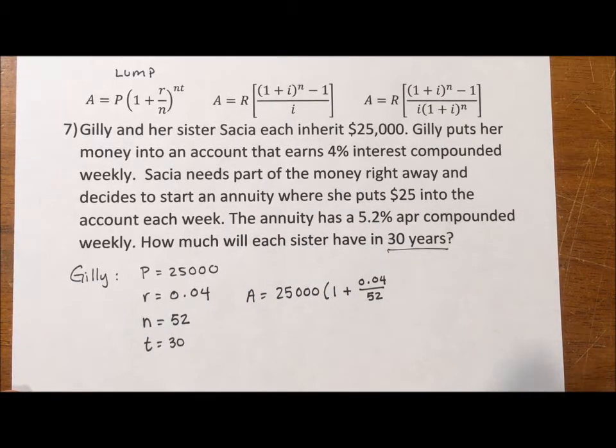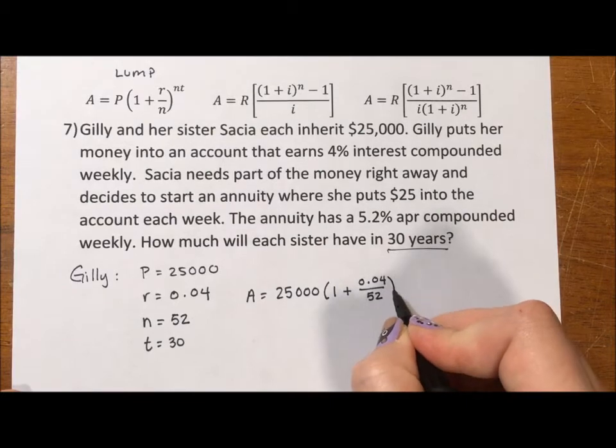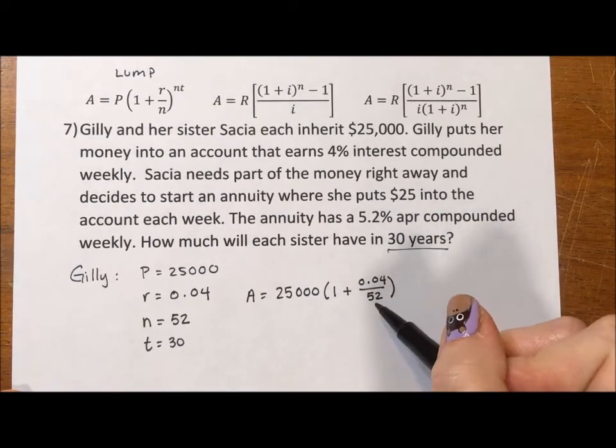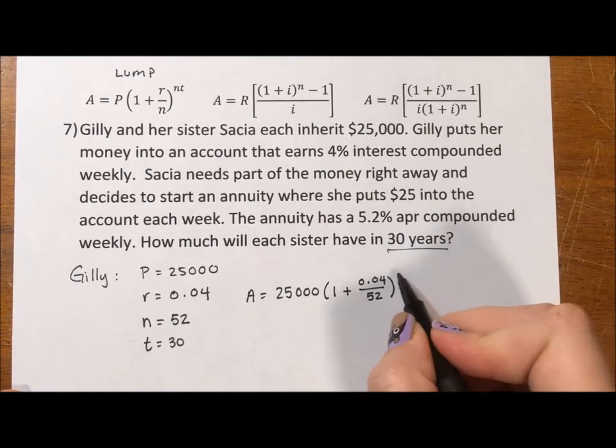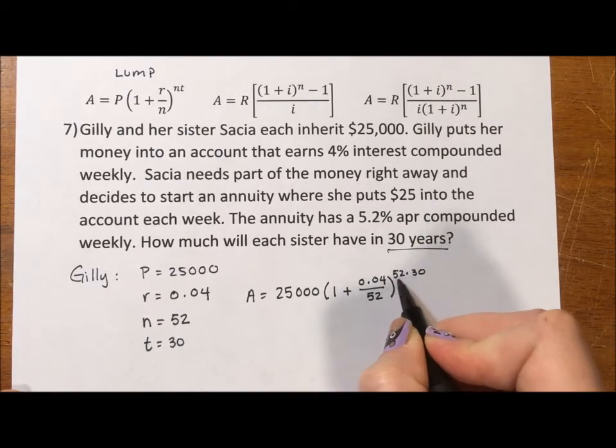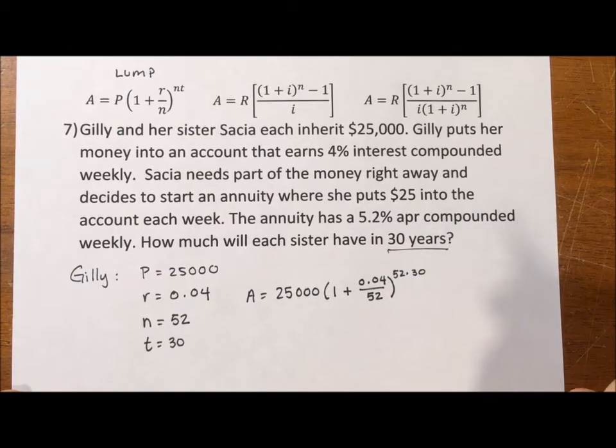The reason that we like compound interest is when that interest is applied, it gets added back into the principal and you start earning interest on your interest after one week. Because this is applied 52 times a year, we need to take this to the 52 times 30, 52 times a year for 30 years.